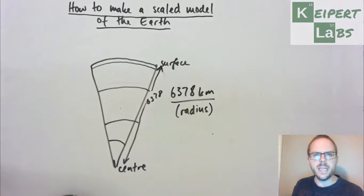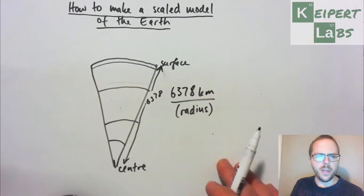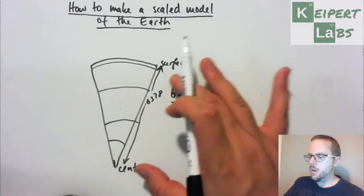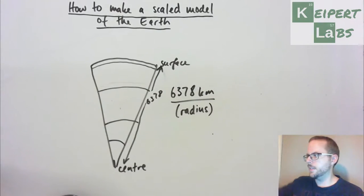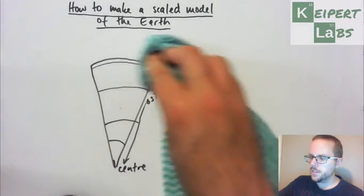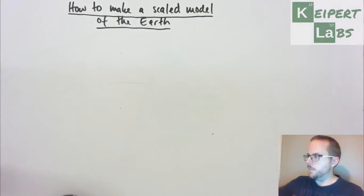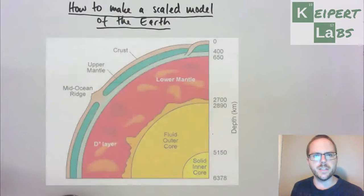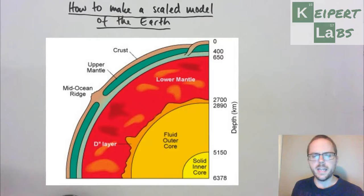So what we need to then do is to work out and say, all right, well for our diagram that we're going to do, that you're going to make, how can we represent these different layers to scale. So first I'm just going to put up on the screen the image that we're going to be basing this from. What you can see on the right hand side of this image is some data about the depths at which the different layers start. Now this particular image has got some other things that you might not have seen on an image of the Earth before.